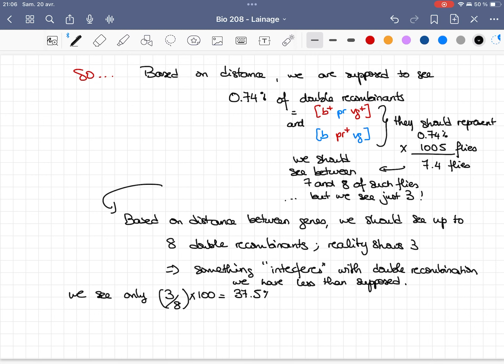So we had that double crossing-over only in 40% of the situations. It also means that the interference is 1 minus 40%, meaning 60%. So 60% of the time, something interfered with the double crossing-over, and we observed only 40% of the supposed double recombinants that we should have had in the population.